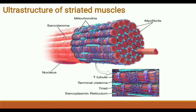Now the ultrastructure of striated muscles. Striated muscle bundles are formed from muscle fibers. Muscle fibers are long, cylindrical, and multinucleated muscle cells. They are multinucleated because myoblasts fuse together to form a syncytial multinucleated muscle fiber. Each muscle fiber has a plasma membrane called the sarcolemma, which encloses the sarcoplasm. The sarcoplasm contains nuclei, mitochondria, a large amount of glycogen reserve, and a hemoglobin-like oxygen-binding pigment called myoglobin.